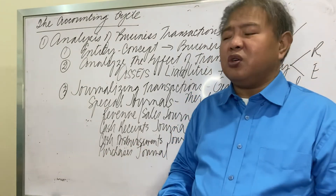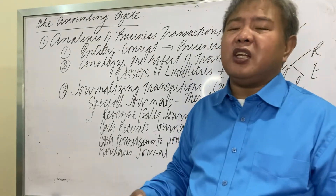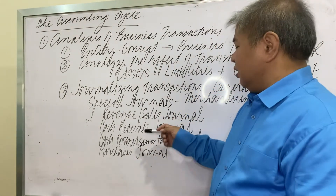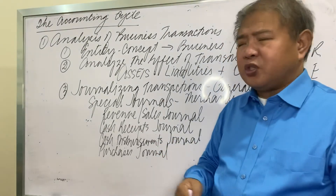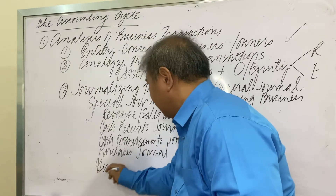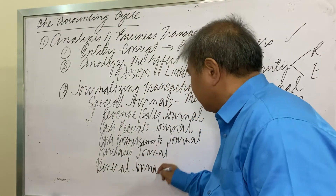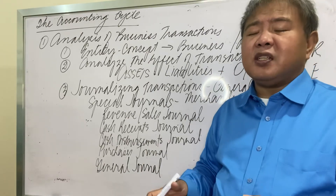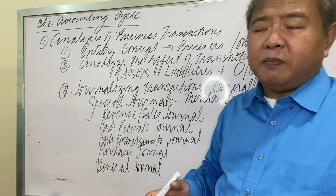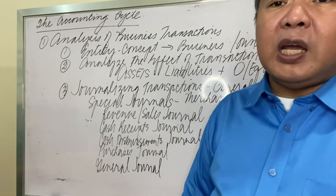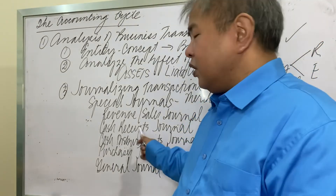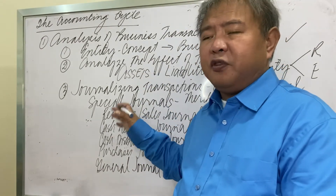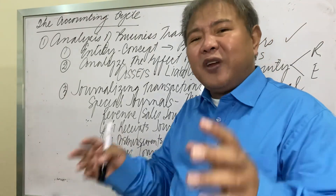Even with all these special journals, you still need the general journal, because some transactions — like adjusting entries — cannot be recorded in any of the special journals. Journalizing means recognizing the transaction for the first time in the books of accounts. We'll cut the discussion here and continue in a few minutes. Thank you for watching!